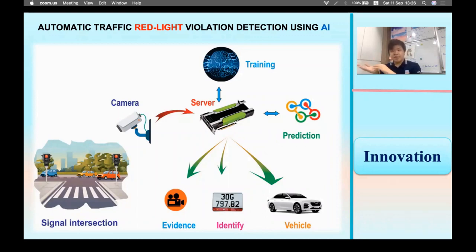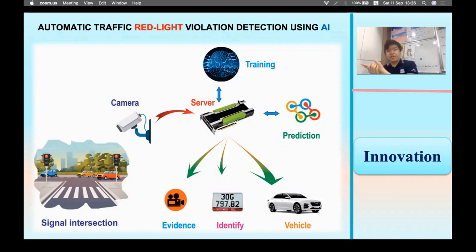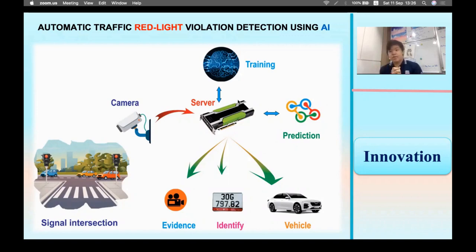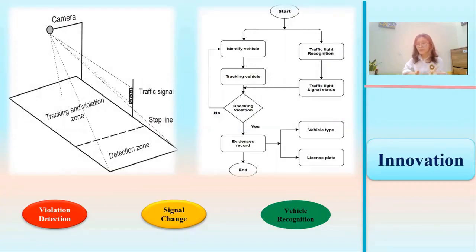We use a camera mounted on the side of a road looking at the intersection and traffic lights. We will be using a convolutional neural network to identify the vehicles, while image processing is used to identify whether the light is red or not. Once a violation is detected, information of the vehicle will be extracted. Our invention consists of three parts: vehicle violation detection, traffic signal change monitoring, and vehicle recognition.